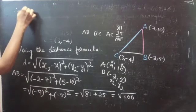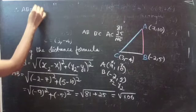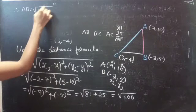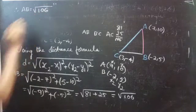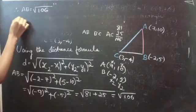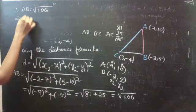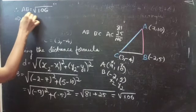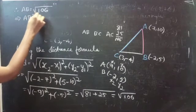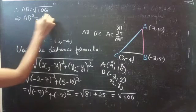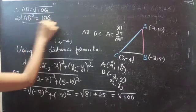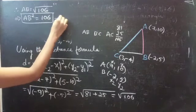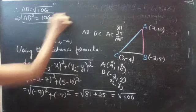Therefore, AB equals to square root of 106. If you square on both sides, then you will get AB squared equals to 106. Consider it as equation 1.